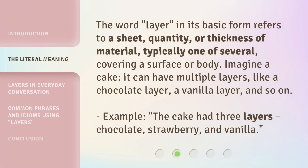The word layer, in its basic form, refers to a sheet, quantity, or thickness of material, typically one of several, covering a surface or body. Imagine a cake — it can have multiple layers, like a chocolate layer, a vanilla layer, and so on. Example: the cake had three layers — chocolate, strawberry, and vanilla.